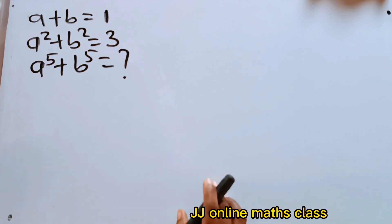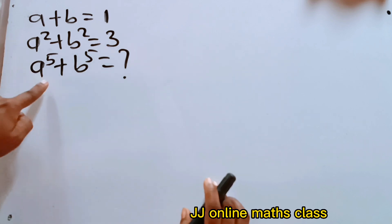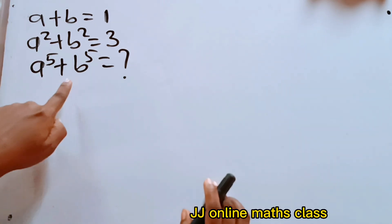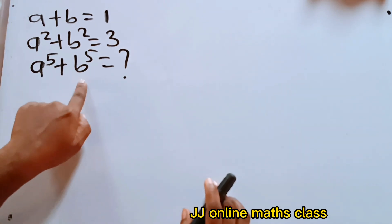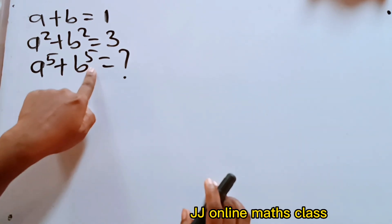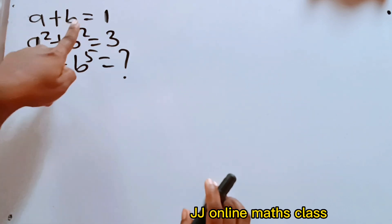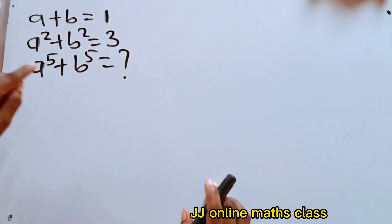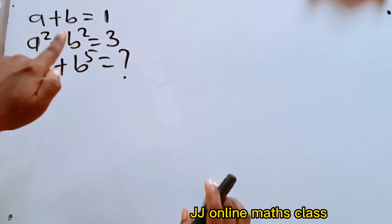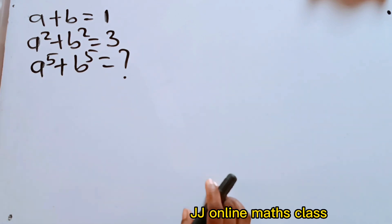Welcome back to my channel. Today we are asked to solve a to the power of 5 plus b to the power of 5, if a plus b equals 1 and a squared plus b squared equals 3.